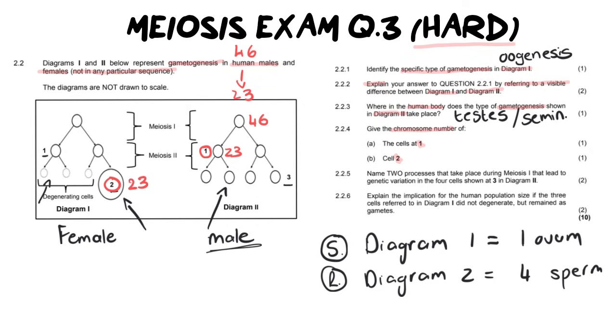Because remember in meiosis one we separate the pairs. In meiosis two we separate the chromatids. So you're not halving 23 again. What you're doing is you're just separating chromatids from one another. And so our answer for cells at one are going to be 23 and cells at two are also going to be 23. Don't be thrown off by an answer being repeated like this because they love to do that to make it more tricky or difficult because you doubt yourself. Don't doubt yourself. You are correct.